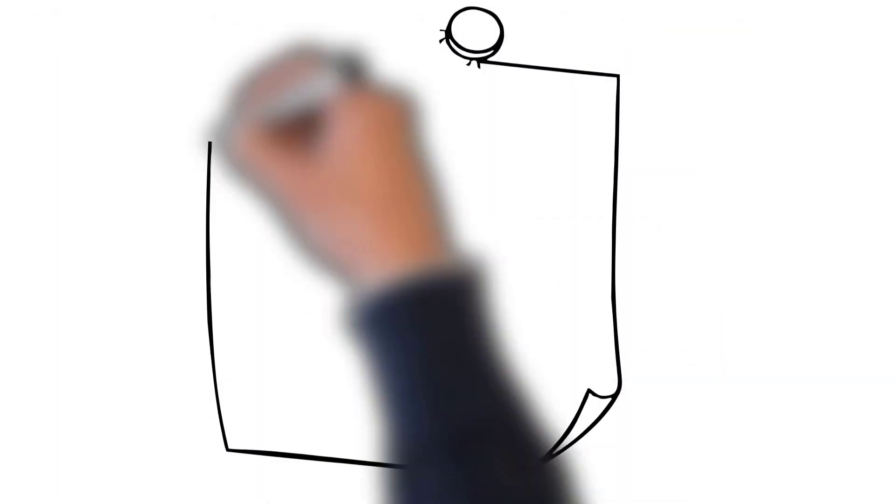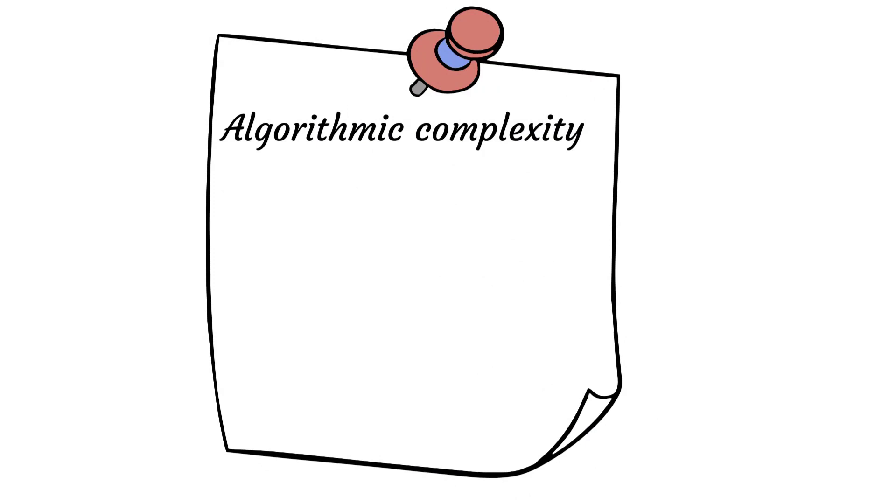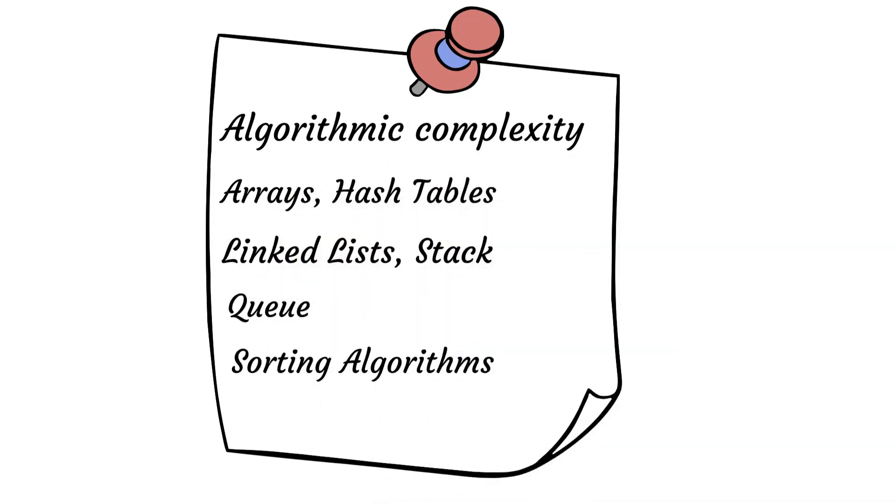In this phase, you can start covering fundamentals of the following data structures and concepts. Understand the concept of algorithmic complexity, that is time complexity and space complexity. Arrays, hash table, linked list, stack, queue, sorting algorithms, and standard binary search.